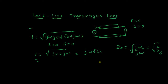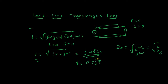As you can see, for a lossless transmission line the propagation constant gamma is purely imaginary. If we write γ = α + jβ, for a lossless transmission line we have α equal to zero. This is the condition for a lossless line.